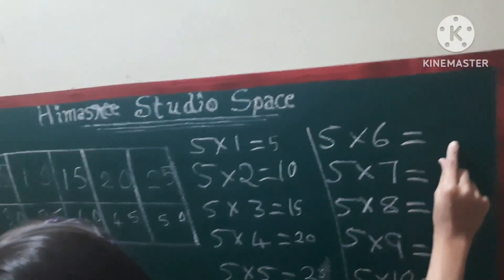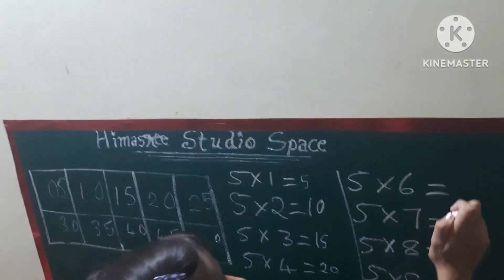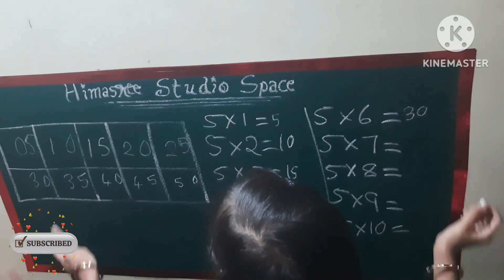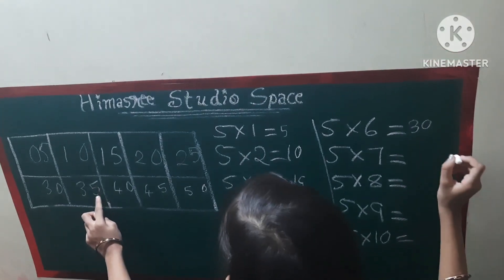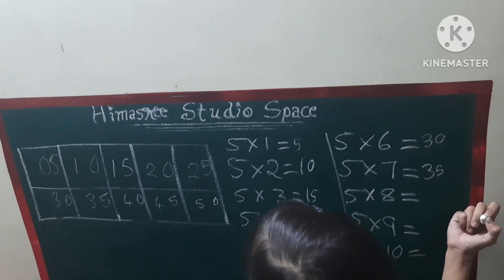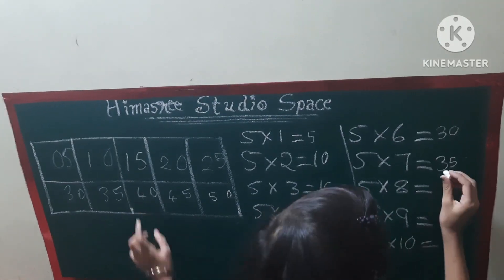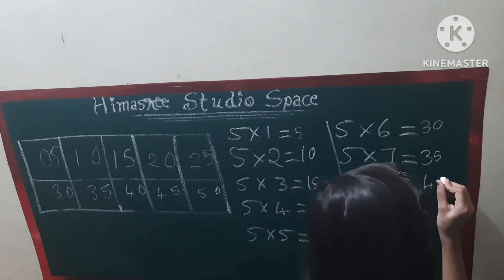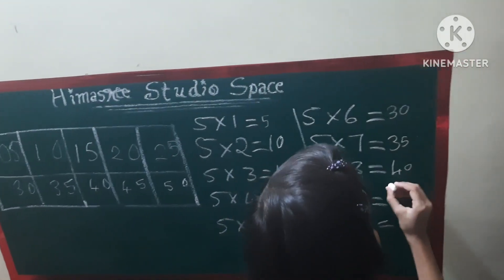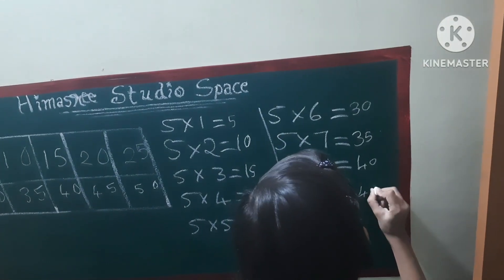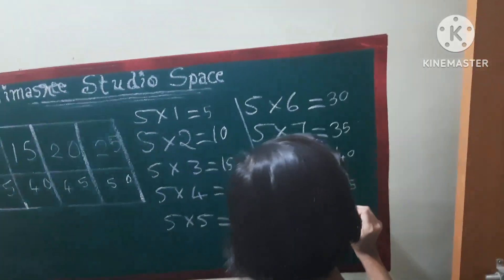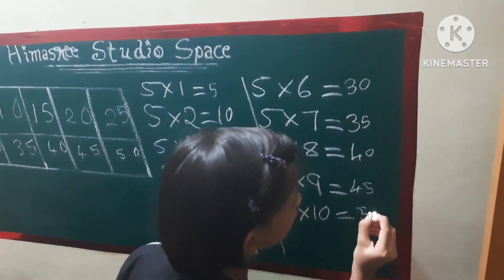5, 6's are 30. 5, 7's are 35. 5, 8's are 40. 5, 9's are 45. 5, 10's are — what's the last digit? 50, of course.